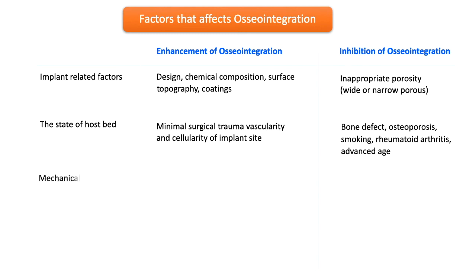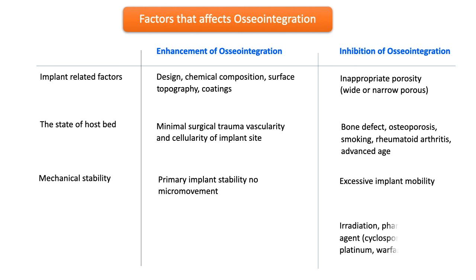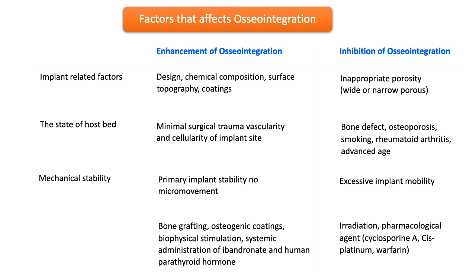Regarding mechanical stability, primary implant stability with no micro-movement is desirable, whereas excessive implant mobility can lead to implant failure. Adjunctive therapies such as bone grafting, osteogenic coatings, biophysical stimulation, and systemic administration of ibandronate and human parathyroid hormone enhance osseointegration due to their indirect effect on bone formation.